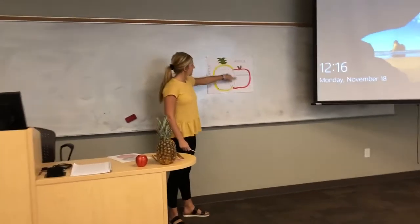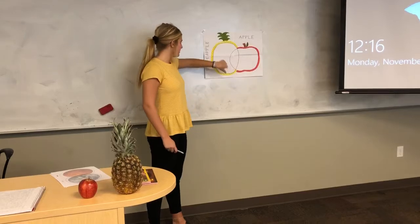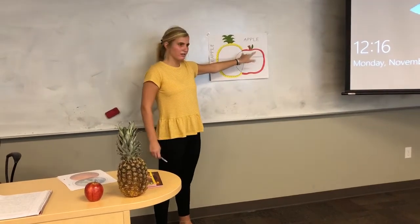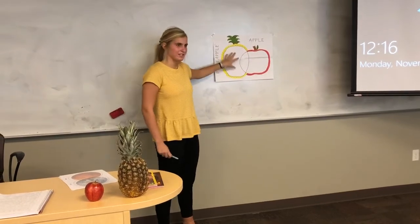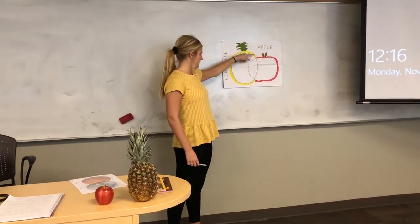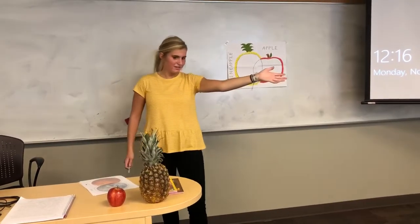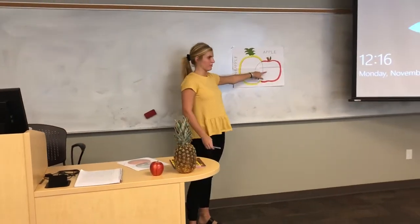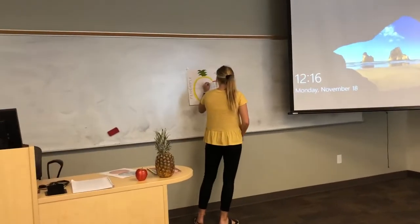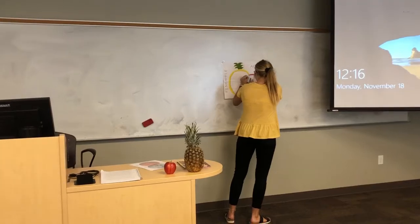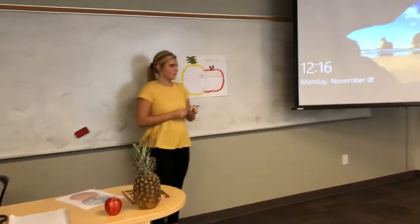A tool we use for comparing and contrasting is called a Venn diagram. It's two circles put together with three sections — one, two, three. The outer ones are for contrasting, so finding the differences, the uniqueness. And then the center one is for comparing, so that's where all the similarities go. So as you said, they're both fruit — what section of the Venn diagram would you put it? In the middle. Good job.